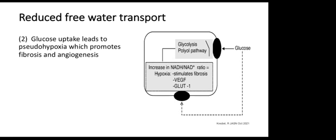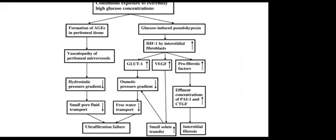This summary slide shows the mechanisms of ultrafiltration failure after continuous exposure to high concentrations of glucose. Formation of advanced glycosylation end products deposits in the interstitium and capillaries, leading to vasculopathy — luminal narrowing — reducing hydrostatic filtration pressure and small pore fluid transport, thus reducing convective fluid transport. Additionally, high glucose concentrations mimic a hypoxic state, promoting downstream fibrosis and neo-angiogenesis and further glucose uptake through transporters, ultimately reducing the osmotic gradient and contributing to ultrafiltration failure.